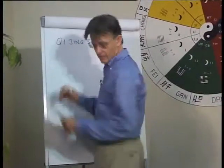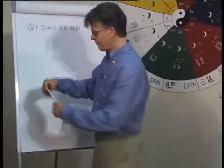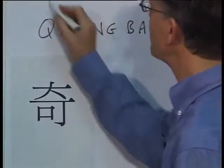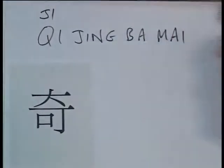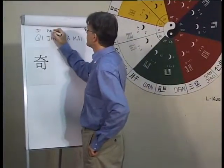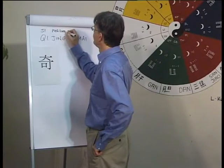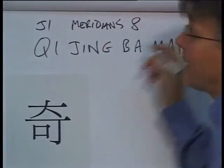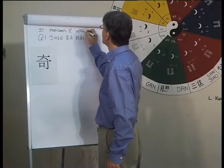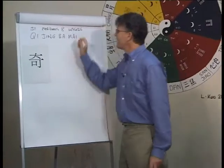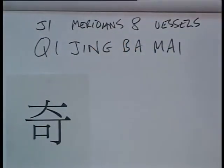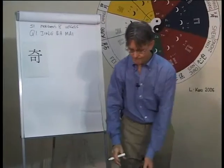Usual translation. Here we have the character for Qi. Qi here, sometimes written Ji. Let's come back to that. Jing, let's call them Meridians or channels. Ba is eight. Mai, how can we translate these things? Vessels, the usual translations. The eight vessels of the Qi Jing, the extraordinary Meridians.